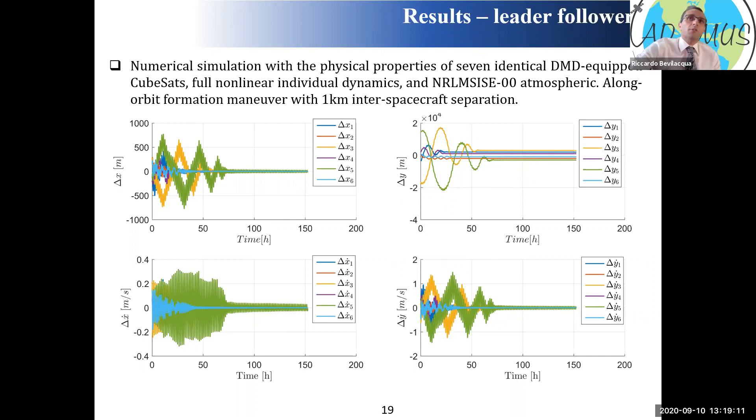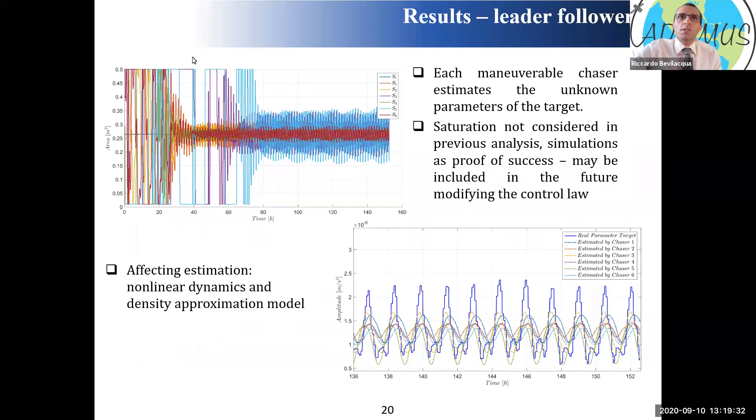The goal is a leader follower formation. So I want to put the three satellites in front of the target, one kilometer apart from each other and three in the back. The maneuver is performed successfully. It takes a good 70 hours or so to see the result. These are tiny forces we're using drag. The simulations are all performed with a full nonlinear dynamics model, a density model that is completely different from the one I assumed that I used to build my vector of unknown parameters. We achieve here in the y direction the separation of one kilometer. And we go to zero on x and zero relative velocities. These are the surfaces that we are commanding to the different spacecraft.